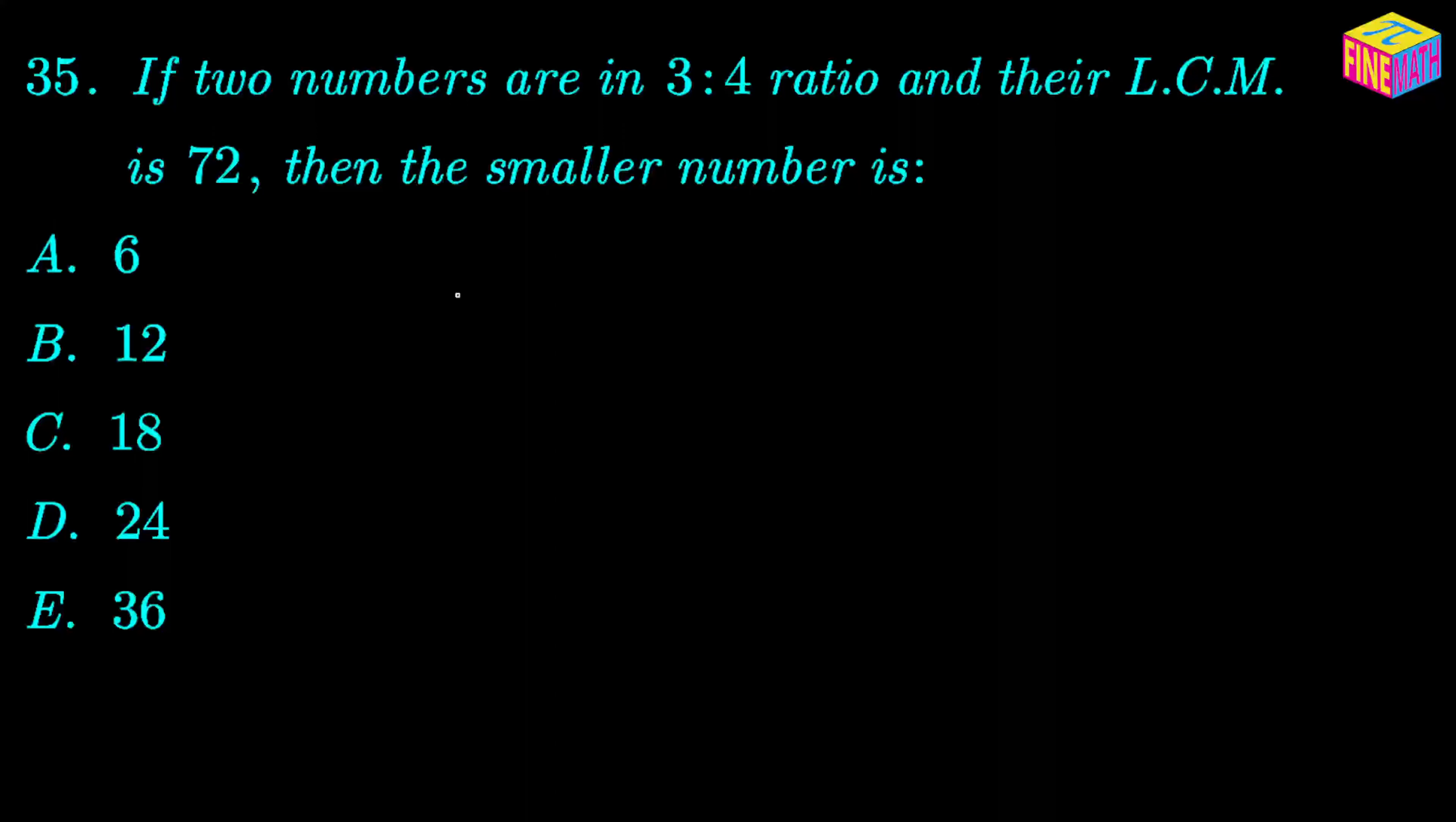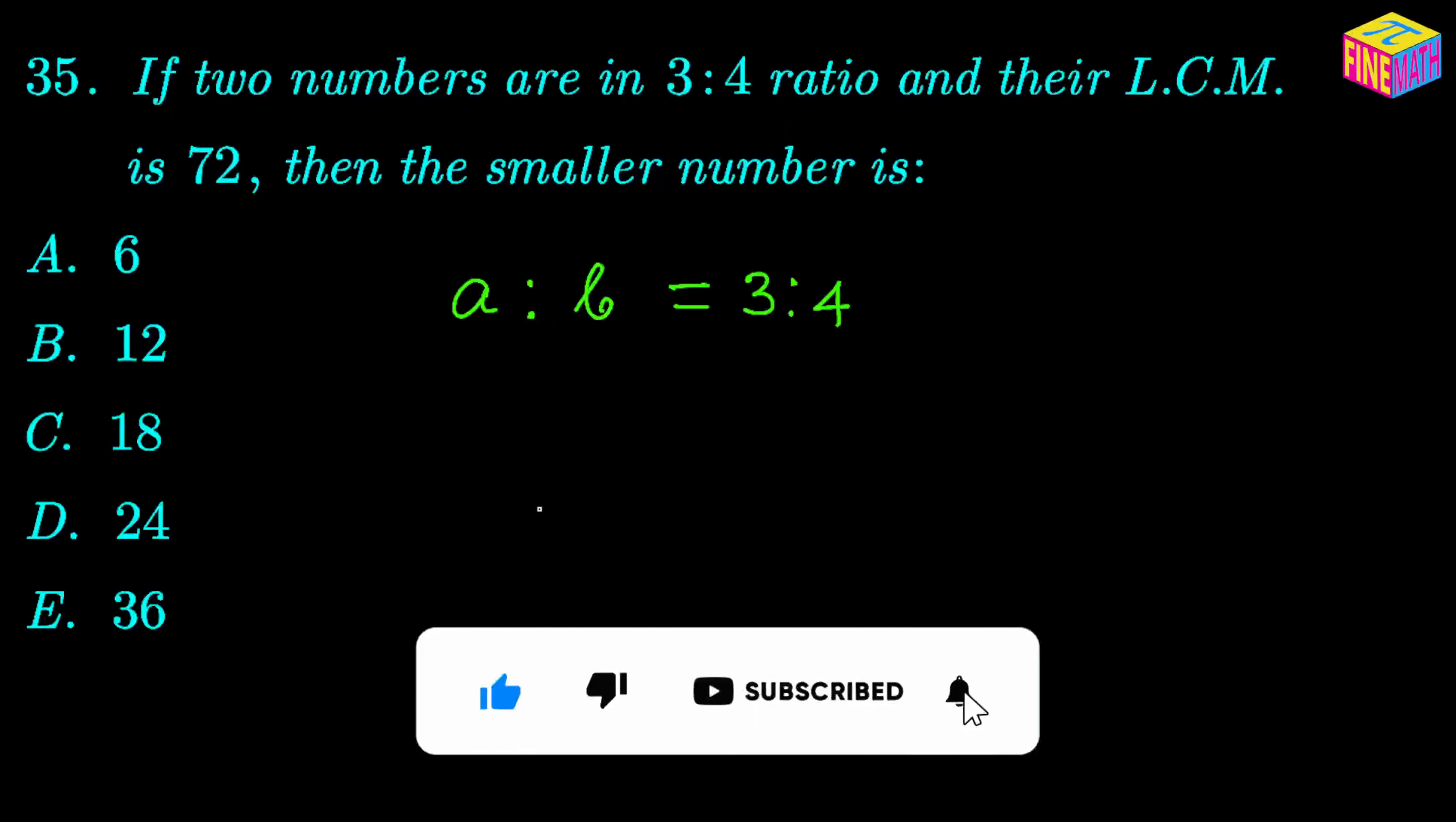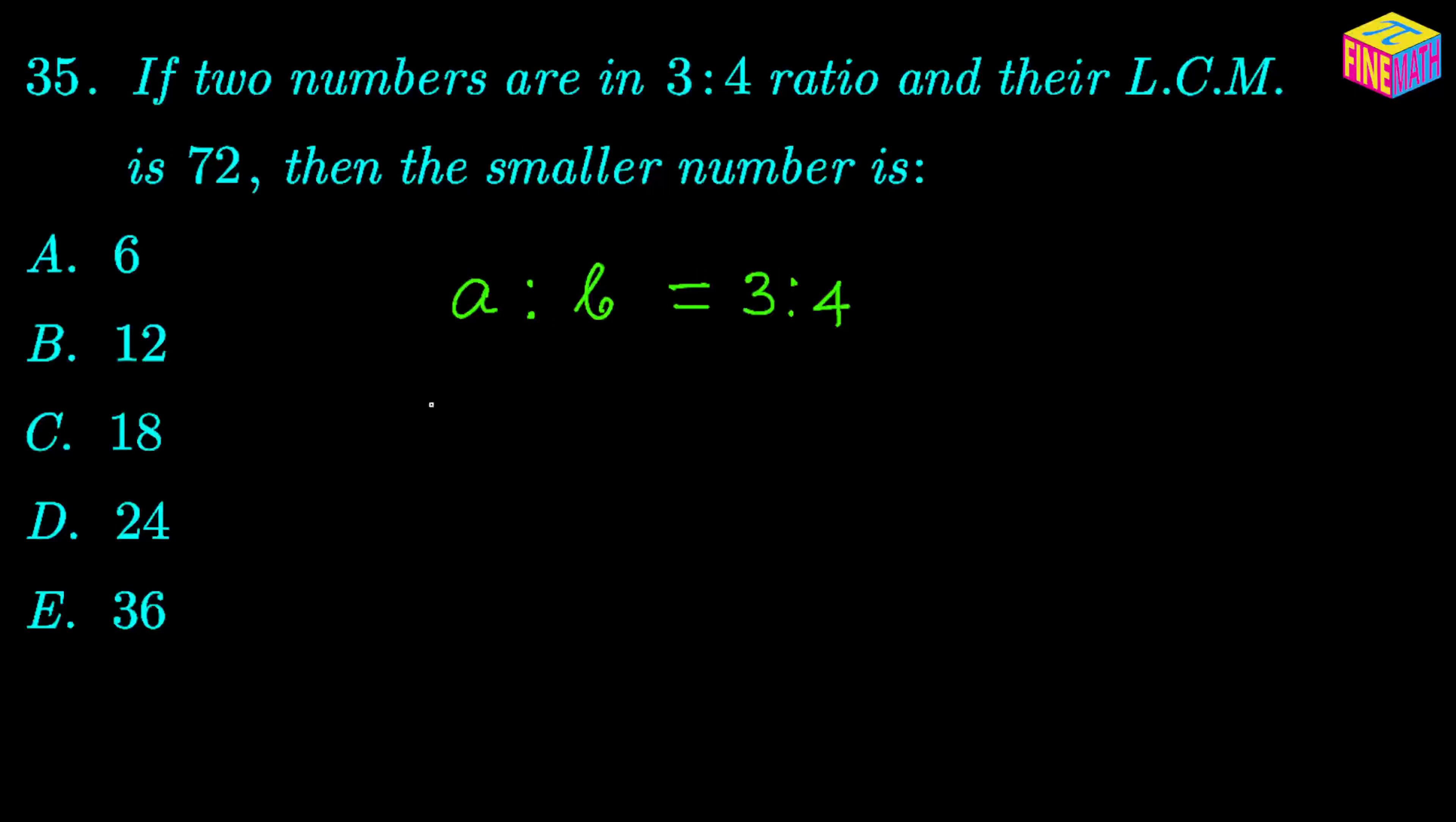If we assume the smaller number is A and the larger one is B, their ratio has been given as 3 is to 4. If we assume the constant of proportionality to be K, then we can say that A would be equal to 3 times K and B would be equal to 4 times K.